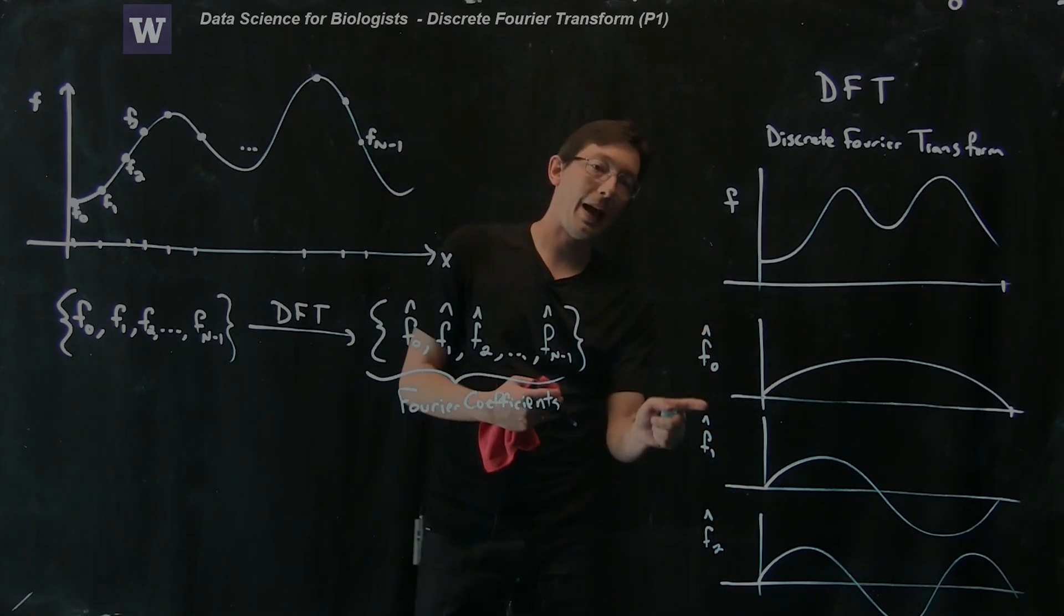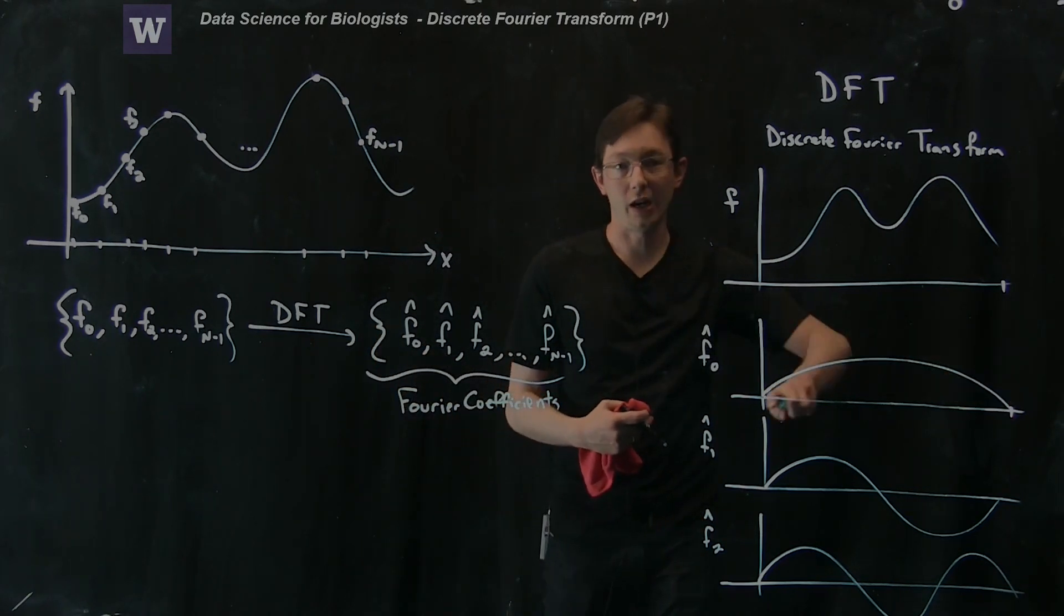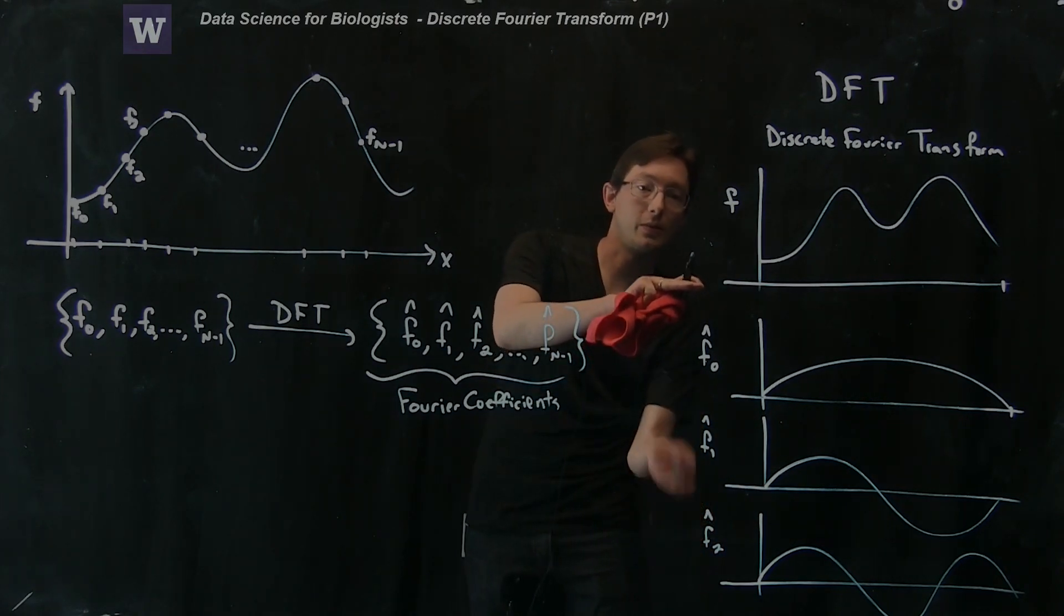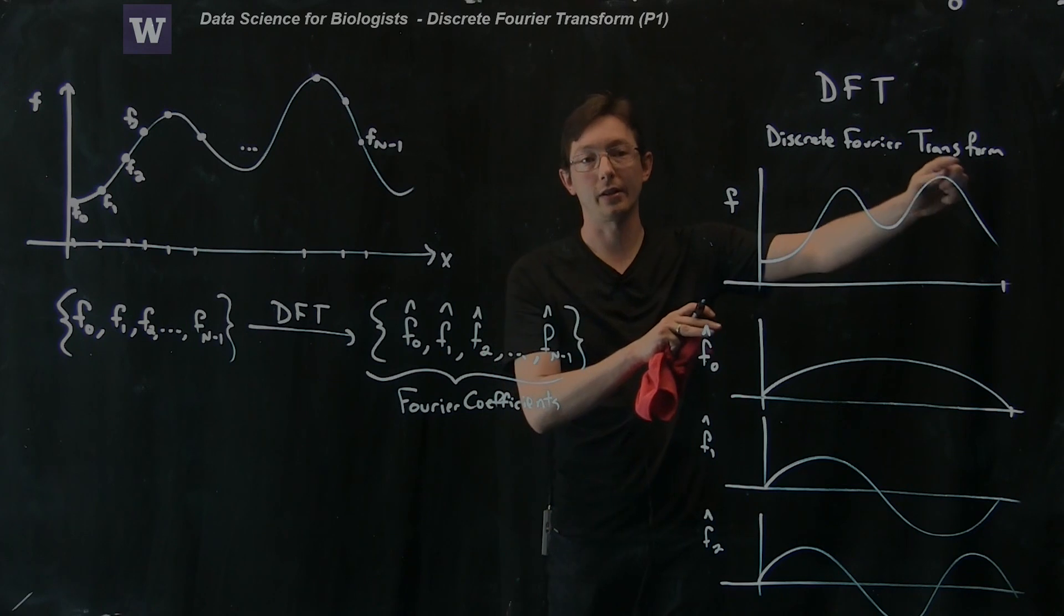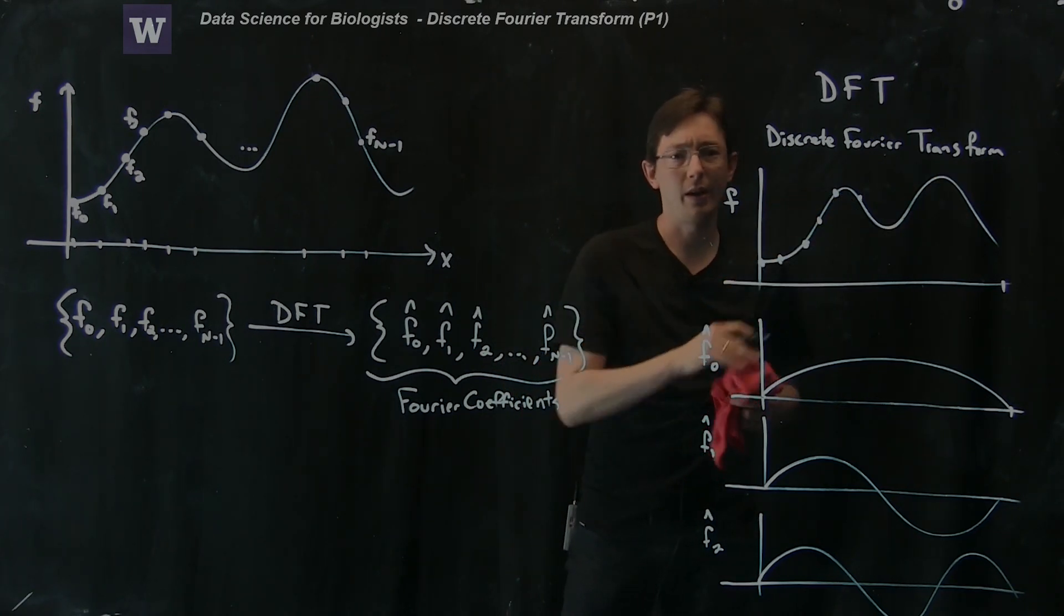And so the coefficients of these are f0 hat, f1 hat, f2 hat, and so on and so forth. And we're going to keep adding up these Fourier coefficients times these shapes, these higher frequency sine waves. And eventually, once we add up enough of these, we'll perfectly reconstruct this shape at all of the data points that we measured.